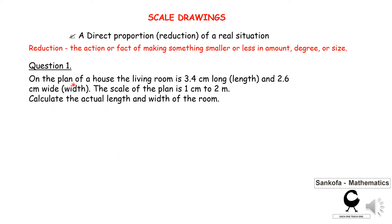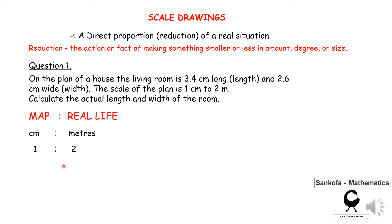It says on the plan of a house, the living room is 3.4 meters long — that's the length — and 2.6 meters wide — that's the width. And the scale is 1 centimeter to 2 meters. So on the map, 1 centimeter represents 2 meters. I write the units on top here, then I write down the unknowns: 3.4 centimeters under centimeter, and I'm looking for the value of X.